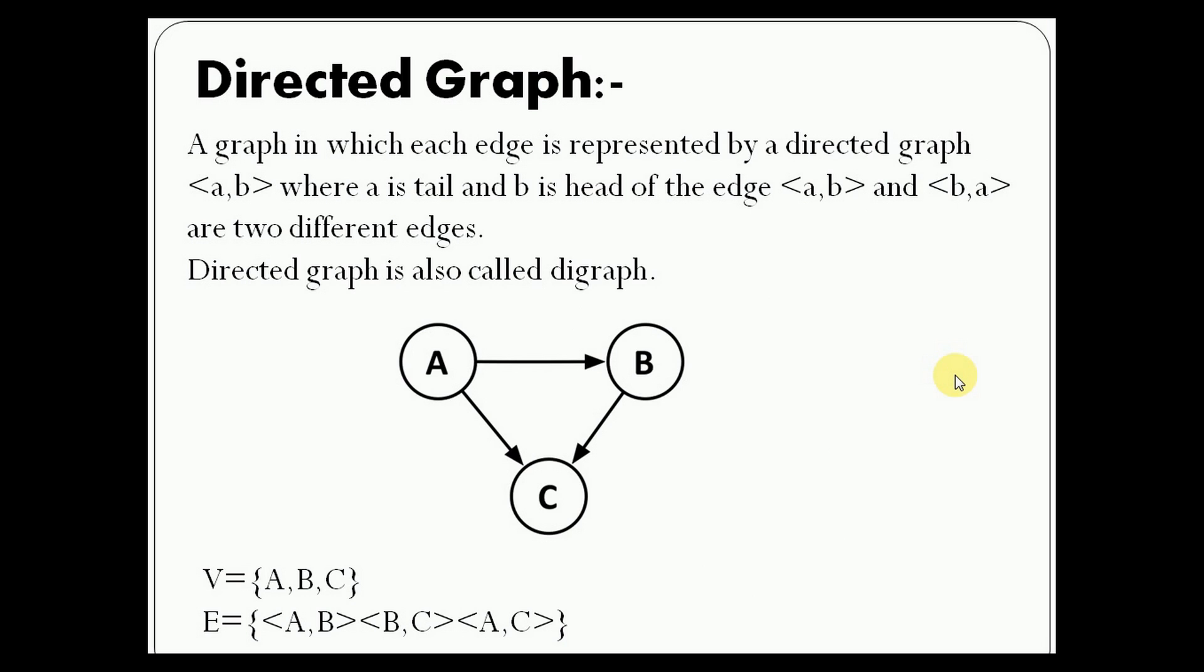Directed graph is one type of graph. A graph in which each edge is represented by a directed edge, for example A to B where A is the tail and B is the head of the edge, and B to A is another edge. This is a directed graph which has a particular direction.